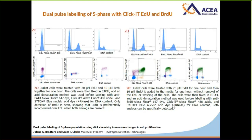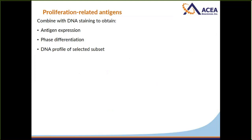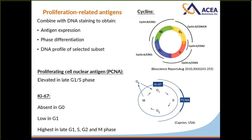The last method uses proliferation-related antigens, which can be combined with DNA staining to obtain antigen expression, phase differentiation, and DNA profiles of selective subsets. PCNA (proliferating cell nuclear antigen) is elevated specifically in G1 and S phase. Ki67 is absent in G0, low in G1, and highest in S, G2, and M phase. Cyclins can also be used: cyclin B is expressed only in M phase; cyclin D in G1; cyclin E in late G1 and early S; cyclin A in S phase and early G2; and cyclin A/CDK1 in G2 and early M phase. All of these can be combined with DNA staining to differentiate phases within the cell cycle.